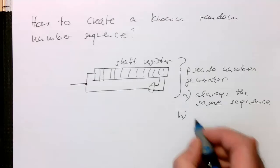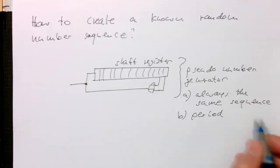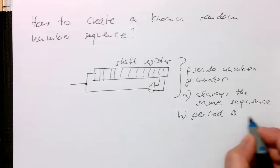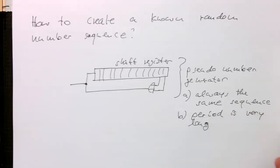And b is a period. The period is usually very long. Can easily go into the millions or billions or even higher. Period is very long.